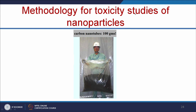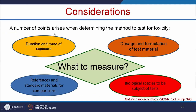Let us see the methodologies for studying the toxicity of nanoparticles. Several points need to be understood: what to measure, duration, route of exposure, dosage, and formulation of the test material. Also, what kind of biological species to use, and whether standard references and materials for comparison are available. These are the questions to be considered before starting nanotoxicology studies. The most important thing is how to design a realistic test — meaningful results on toxicity are achieved when conditions of possible exposure are reproduced accurately.